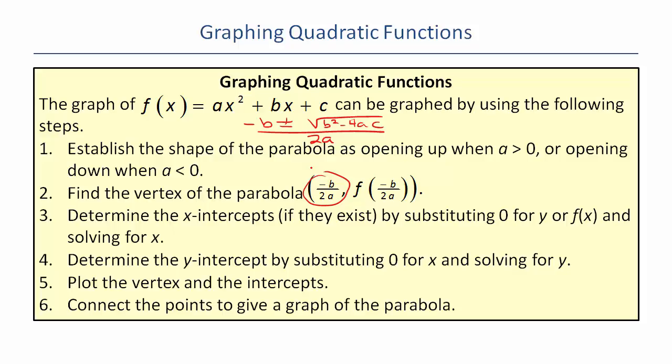But you use that to find the two x-intercepts if they exist. They don't have to exist. You could have a parabola that looks like this. There's my x and y axis and then my parabola is here. Never crosses or it's down here. Never crosses. So you could have parabolas with no x-intercepts.